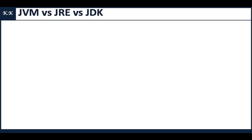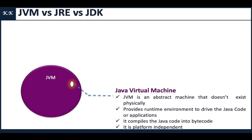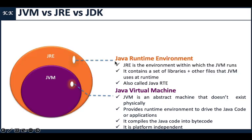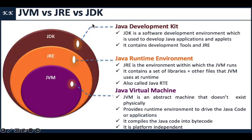JVM stands for Java Virtual Machine, which is an abstract machine that does not exist physically. JVM provides a runtime environment to run Java code or applications. JVM compiles Java code into bytecode and it is platform independent. JRE stands for Java Runtime Environment, which is the environment within which the JVM runs. It contains a set of libraries plus other files that JVM uses at runtime. JRE is also called RTE.